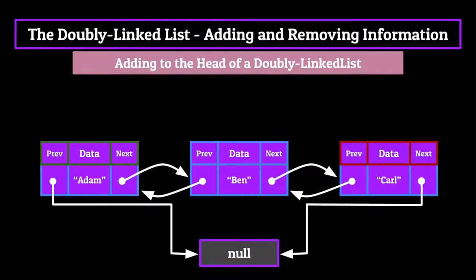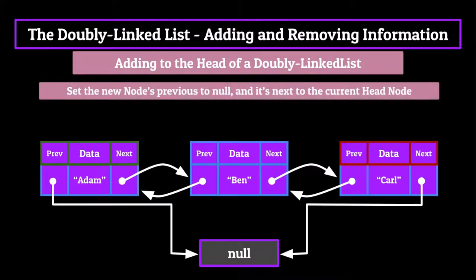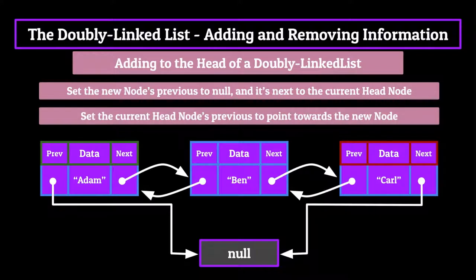Adding to the head of a doubly linked list is quite simple. The first step is to take our new node that we want to insert, set its previous to null, and its next to point towards the current head of the linked list. Then all we do is set the current head's previous to point towards this new node instead of a null value, and we're set to go. Doing this rearranges the pointers so that this new node becomes the head of the linked list.